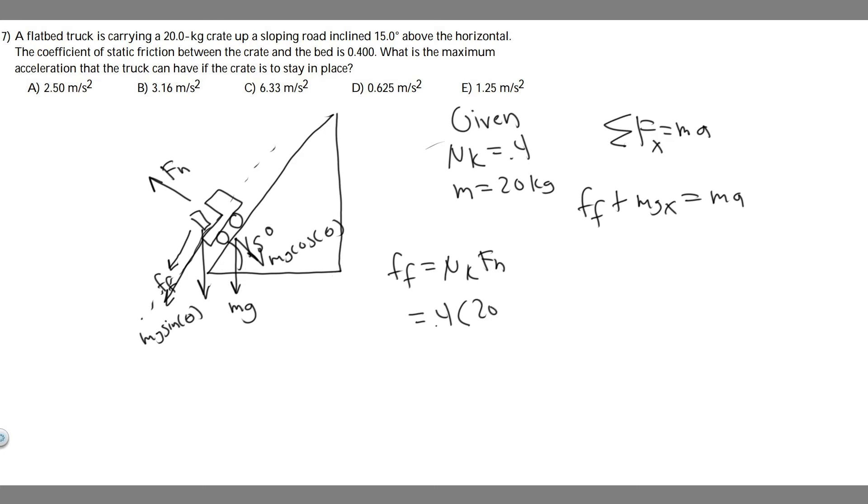So f sub n is mg times the cosine of theta. So m is going to be 20 times g, which is 9.81, times the cosine of theta. And so theta for both of these is the angle at which you're inclined, so 15. So go ahead and multiply this out. 0.4 times 20 times 9.81, then times the cosine of 15.